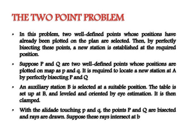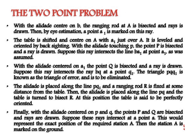An auxiliary station B is selected at a suitable position. The table is set up at B, leveled, and oriented by eye estimation, then clamped. With the alidade touching small p and small q, the points capital P and capital Q are bisected and rays are drawn. These rays intersect at B. With the alidade centered on B, the ranging rod at A is bisected and a ray is drawn. By eye estimation, a point A1 is marked on this ray.